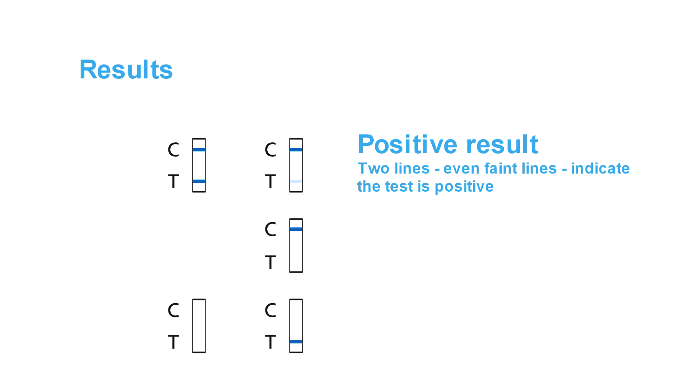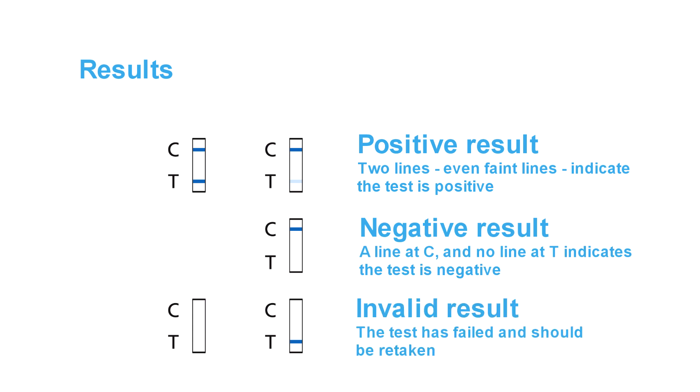A positive result has two lines. Even faint lines indicate the test is positive. A negative result will only have one line at C. An invalid result will have no line at C.